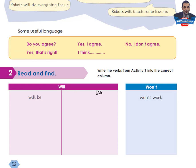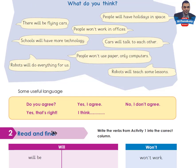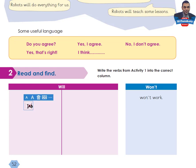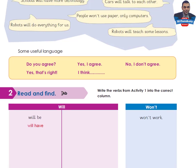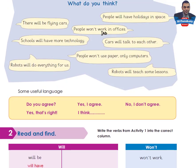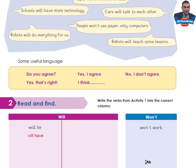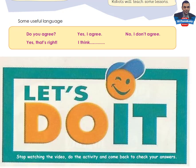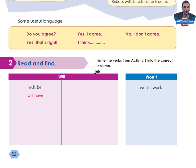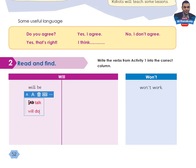I'll give you an example. 'Will have' — I write it in the 'will' column. In the 'won't' column: 'won't work.' Take your time to do the task, then come back to check your answers. Here are the answers: in the 'will' column: will be, will have, will talk, will do. In the 'won't' column: won't work, won't use.